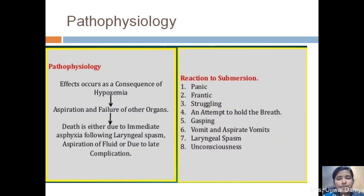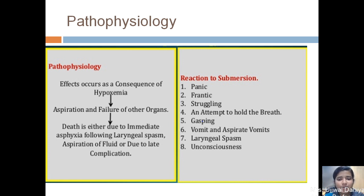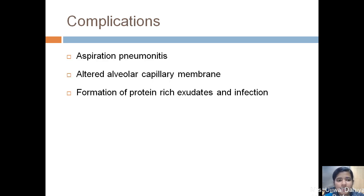In the pathophysiology of drowning, aspiration of fluid causes failure of respiratory status, leading to death and immediate asphyxia, following laryngeal spasm that may lead to complications like pneumonia. The reaction to submersion includes panic attack, frantic mixed emotions like anxiety and fear, struggling for life, attempt to hold the breath, then gasping, vomiting, aspirating vomit, and laryngeal spasm leading to unconsciousness. Complications include aspiration pneumonitis, altered alveolar capillary membrane due to fluid shift, and formation of protein-rich exudate leading to colonization of microorganisms and infection.